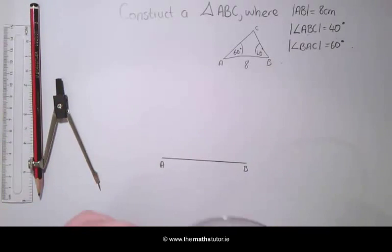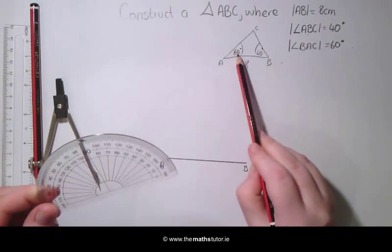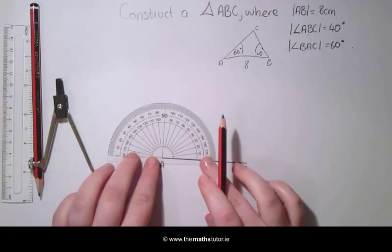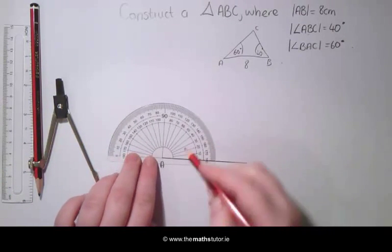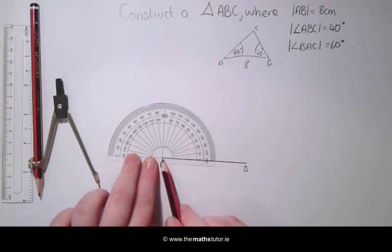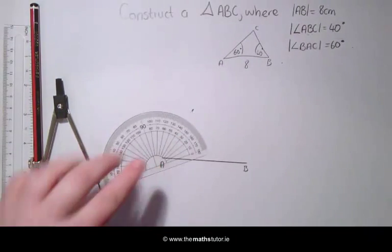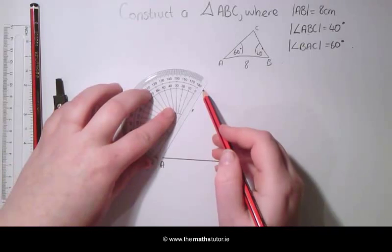We then use our protractor and we are going to draw an angle of 60 degrees at our point A. So making sure our protractor is set up at the center, we draw a marker angle of 60 degrees and we are going to draw a line through this.